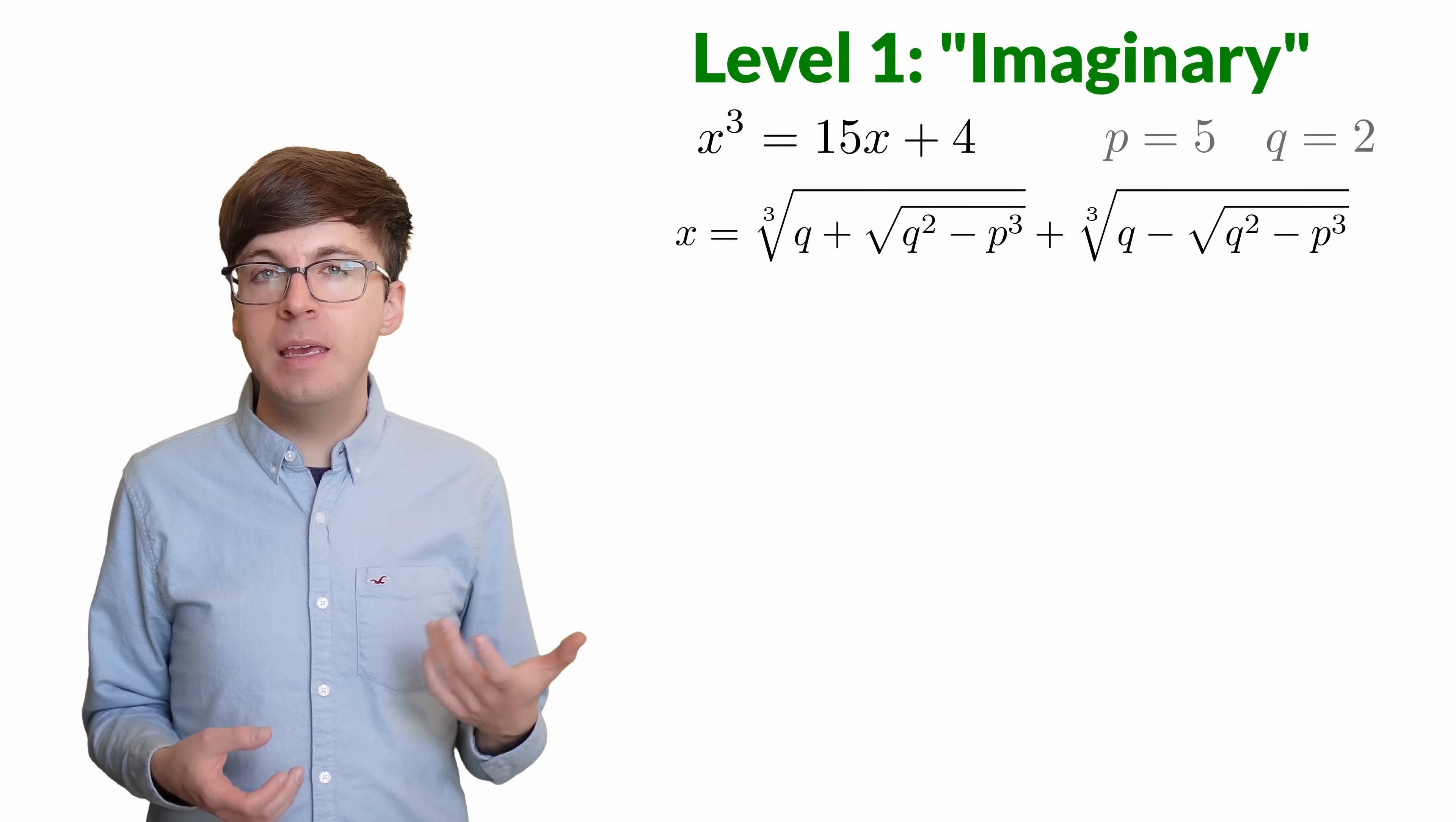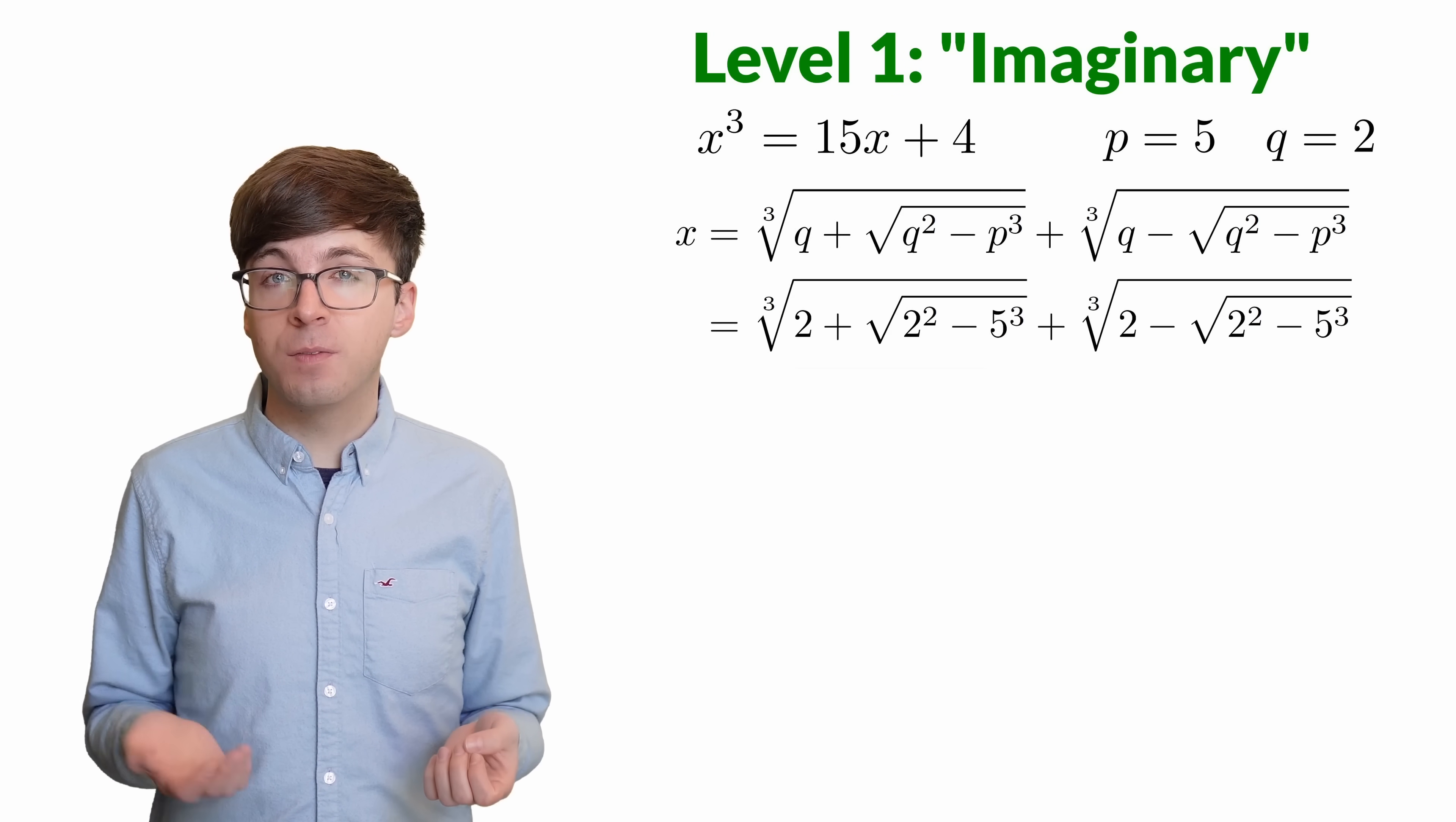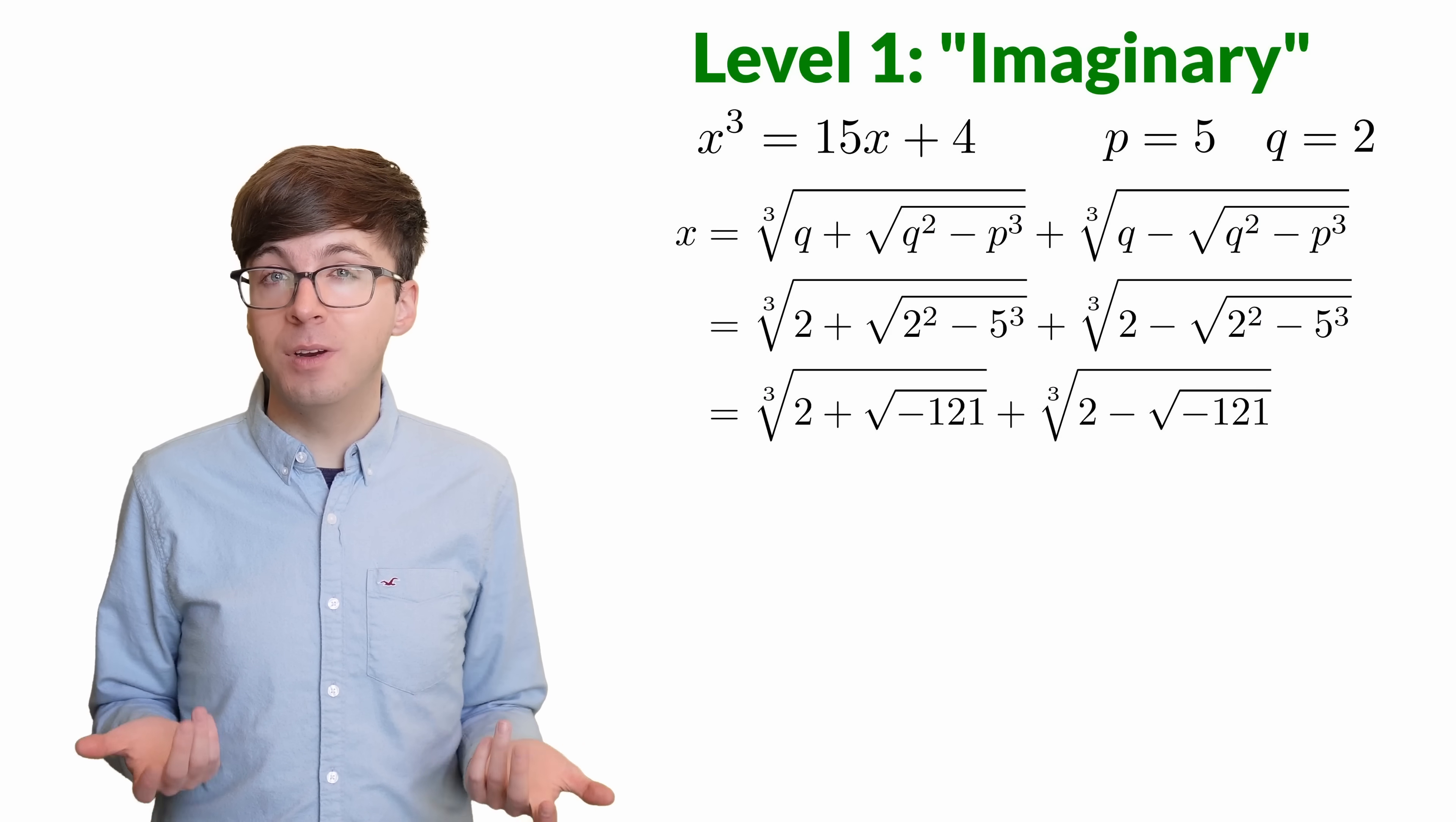In our example, p equals 5 and q equals 2, so we can plug those in. But notice what happens. q squared minus p cubed is 2 squared minus 5 cubed, which is negative 121. So Cardano's formula has a negative square root in this case.